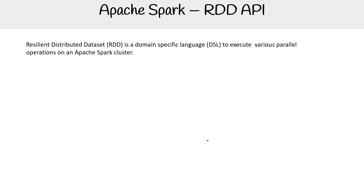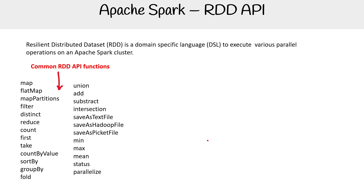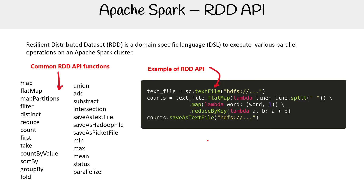The way you interact with Spark is through the Resilient Distributed Dataset (RDD), which is a DSL to execute various parallel operations on the Apache Spark cluster. Some common functions include map, filter, distinct, count, min, max, mean, and parallelize. Here's an example of the RDD API — basically all of these functions — which makes it really easy to transform and work with data.